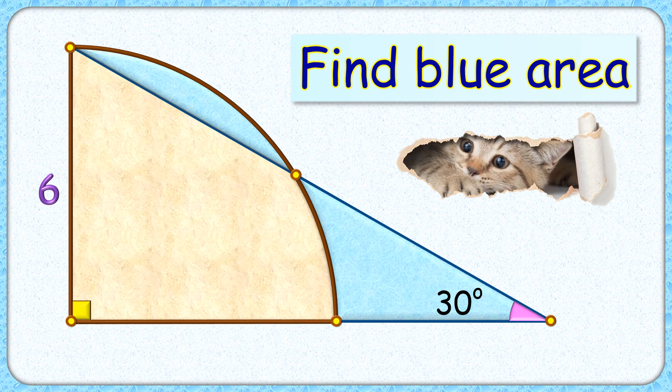Welcome everyone. This interesting question shows a quadrant with radius 6 centimeters and a right angle triangle with one angle as 30 degrees and height as 6 centimeters. The exciting part is, with this limited data, we have to find the area of this blue shaded region.